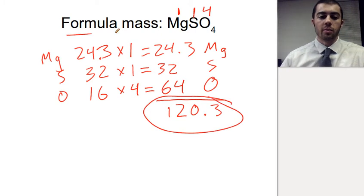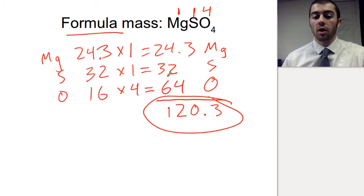With formula mass, what we want to do is add up all the parts, and that gives us the total for the compound.